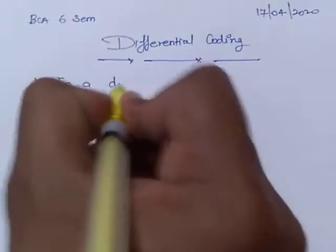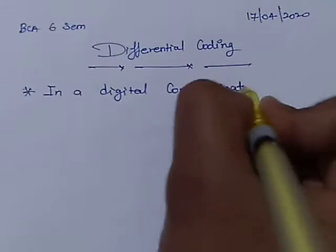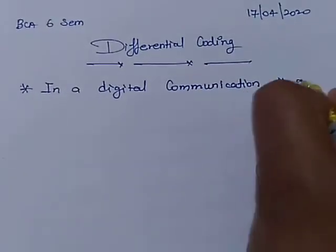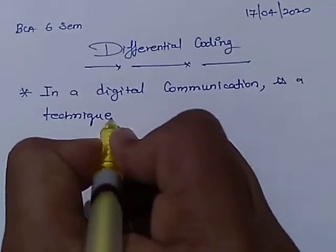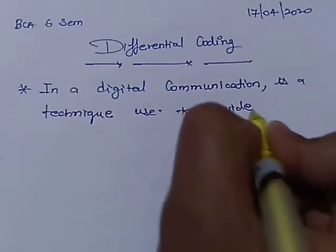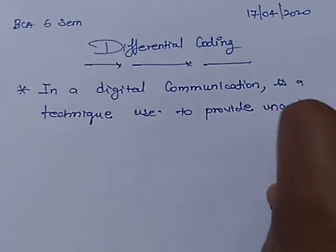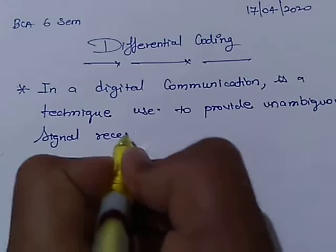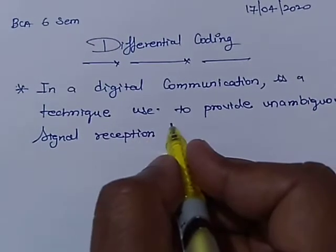In digital communication, differential coding is a technique used to provide unambiguous signal reception when using some type of modulation.